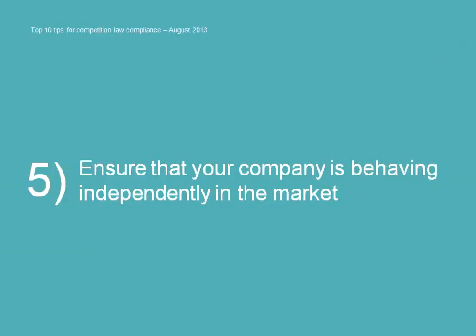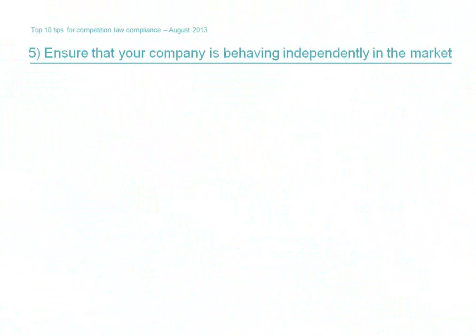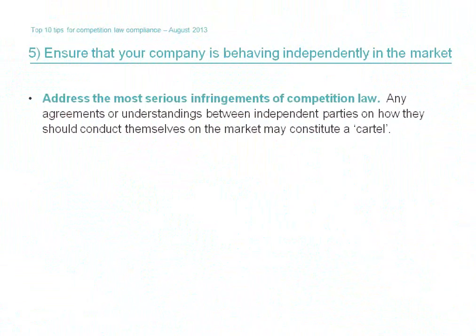Tip number five: ensure that your company is behaving independently in the market. Many of the most serious competition infringements can be avoided by asking the simple question: has my company decided on its commercial strategy by itself independently, or has it discussed or agreed it with another company? Commercial agreements remain important and are the lifeblood of your company, but other sorts of agreements where conduct is aligned — often in more informal arrangements — can be problematic and lead to competition infringement.